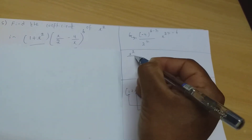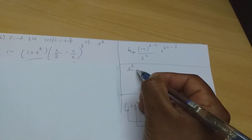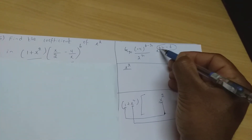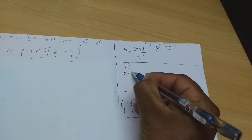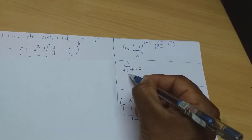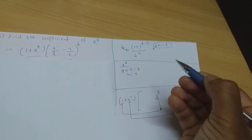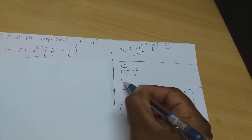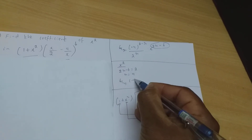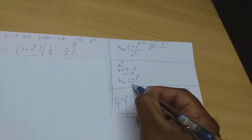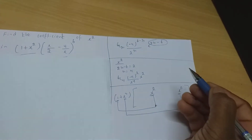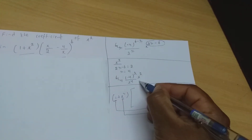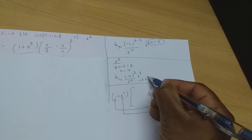To get x²: set 2r − 6 = 2, so r = 4. Substituting r = 4: 6C4 · (−4)^(6−4) / 2^4 = 15 × (−4)² / 16 = 15 × 16/16 = 15. So the coefficient of x² is 15.